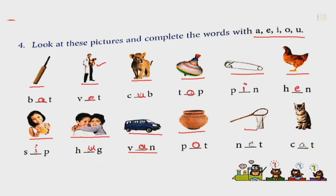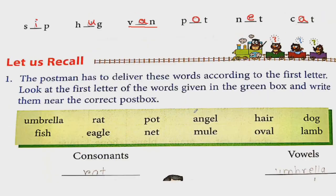Now look at this. This is a net. So we will use vowel E: N, E, T. And this is the picture of cat, so C, A, T, cat.